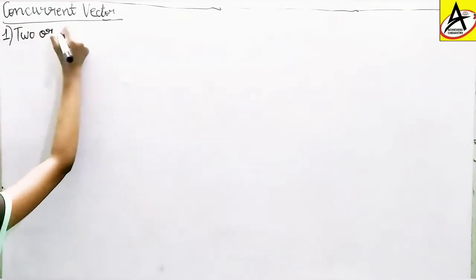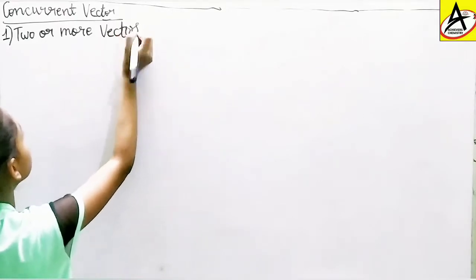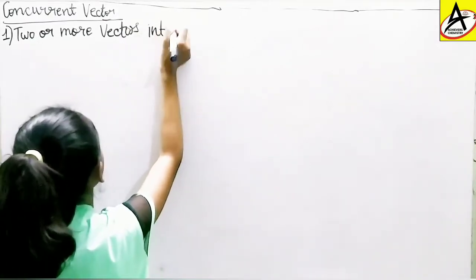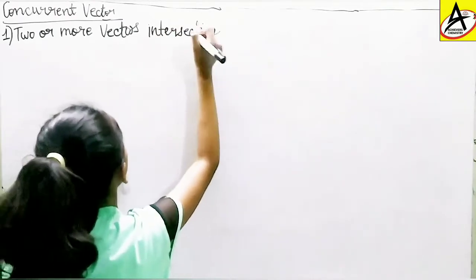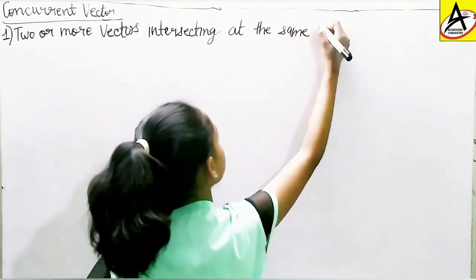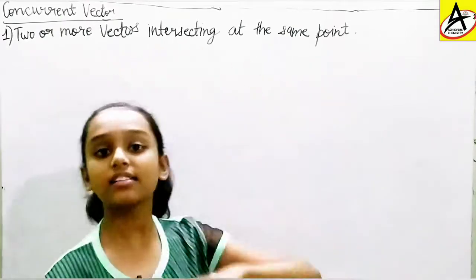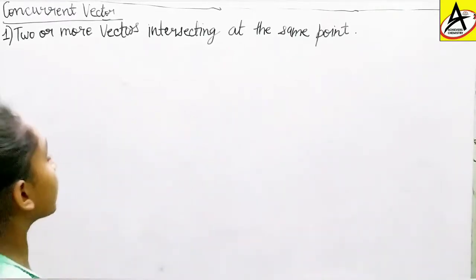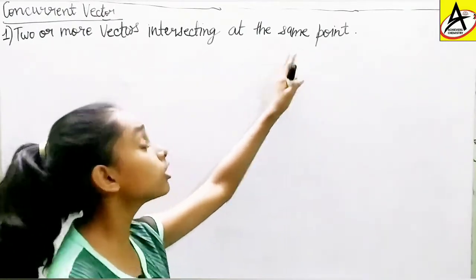The first definition is: two or more vectors intersecting at the same point. This means two or more vectors which intersect each other, and they must be at the same point.